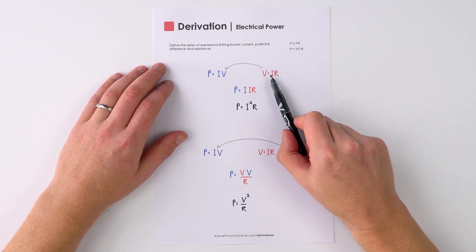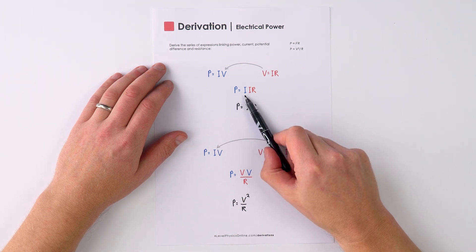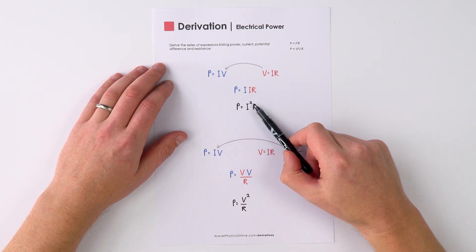So we can simply substitute the V here for IR, and therefore P is equal to I times I times R, so P equals I squared R.